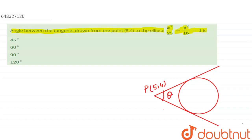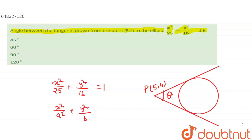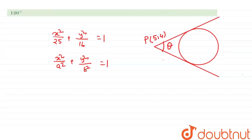There are 4 options — which option is correct? We can first draw the ellipse and mark point P(5, 4). Given ellipse: x² / 25 + y² / 16 = 1. The general form is x² / a² + y² / b² = 1. Comparing, we get a² = 25 and b² = 16.